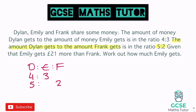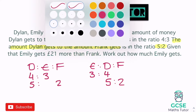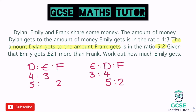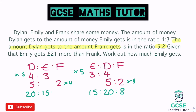I'm going to rearrange so Dylan is in the middle: Emily to Dylan to Frank. For the first ratio, swapping it around gives 3 to 4 for Emily to Dylan. For Dylan to Frank it's 5 to 2. Times the top one by five and the bottom one by four to make 20 in the middle: the top gives 15 to 20, the bottom gives 20 to 8. So our three-part ratio is 20 to 15 to 8 — or equivalently written as Emily: 15, Dylan: 20, Frank: 8.